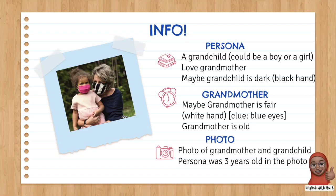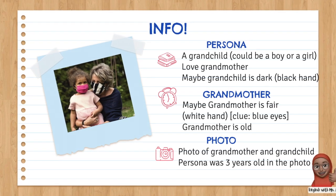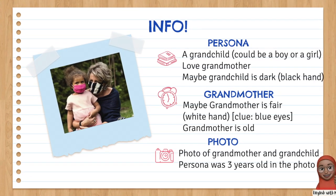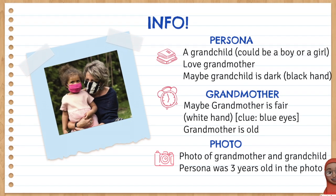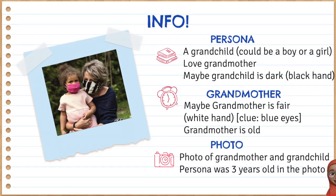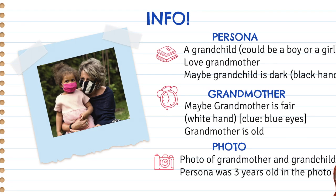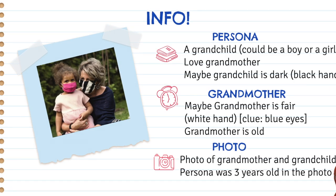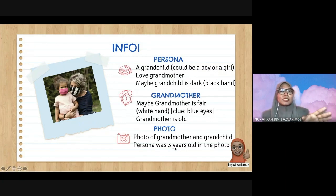The persona is a grandchild — it can be a girl or a boy; we do not know the gender. The persona loves the grandmother, and maybe the grandchild is dark-skinned, indicated by 'black hand.' From the clues in the poem, this is a photo of grandmother and grandchild, taken when the persona was three years old. That is the information you should know.